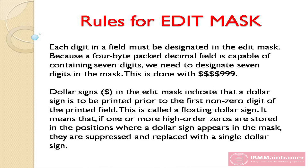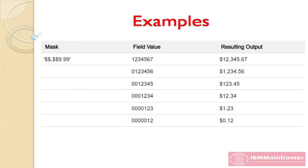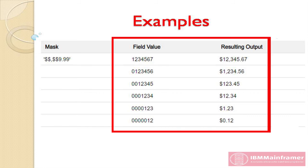It means that if one or more high-order zeros are stored in the positions where a dollar sign appears in the mask, they are suppressed and replaced with a single dollar sign. As the number of leading zeros increases, the dollar sign automatically floats to the right. The digit 9 indicates that any value occurring in that position is printed as a digit. In this example, all values in the ones column, or to the right of the decimal, are printed as digits.